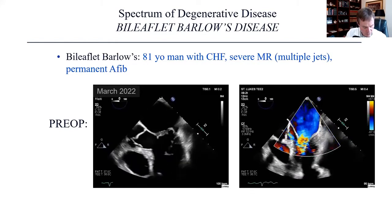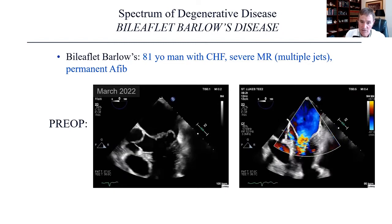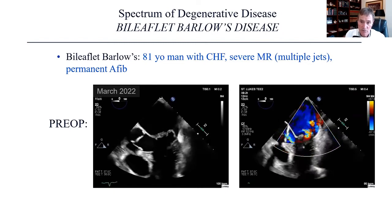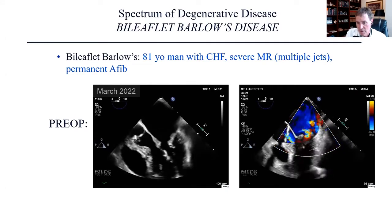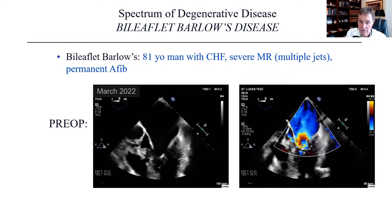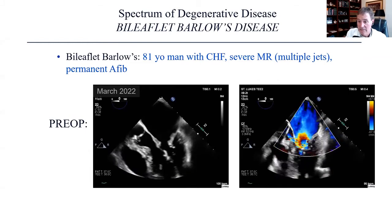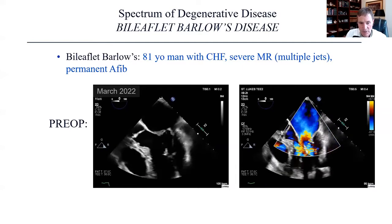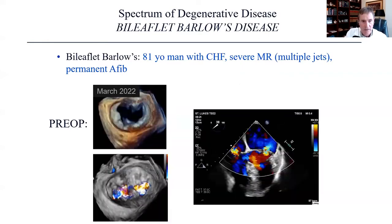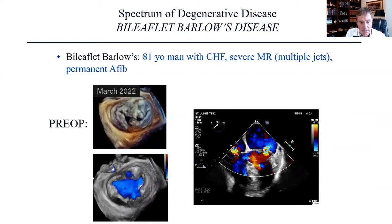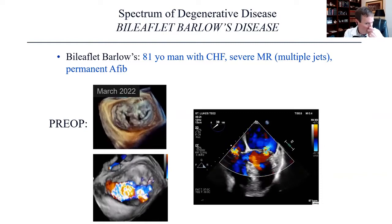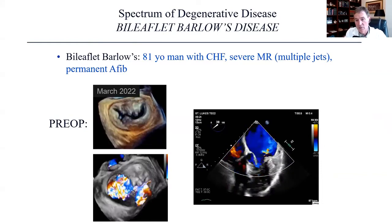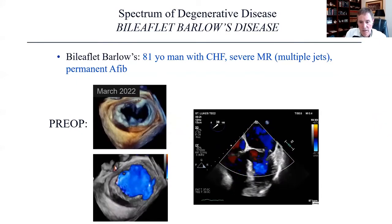Here's one more — an 81-year-old gentleman with congestive heart failure, actually a physician, waiting preoperatively. He has severe mitral regurgitation with multiple jets, permanent atrial fibrillation, anterior leaflet prolapsing, posterior leaflet prolapsing, and multiple jets on color imaging. This is going to take multiple techniques to repair, but I'm optimistic. On 3D imaging, P2 and P1 are prolapsed, A2 and A3 look abnormal, there's a wide jet in the middle, and he also has tricuspid regurgitation as one might expect with longstanding mitral regurgitation. This is next week — wish me luck.